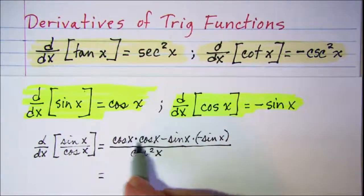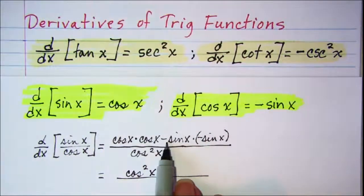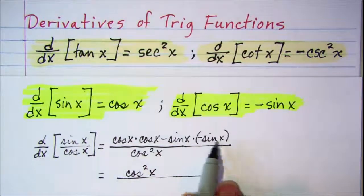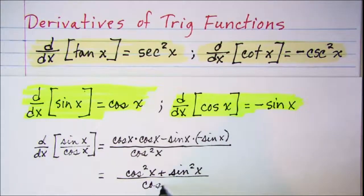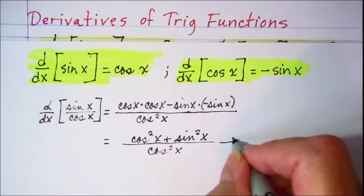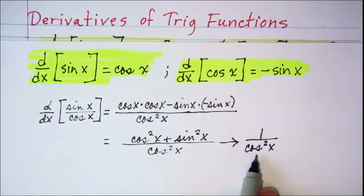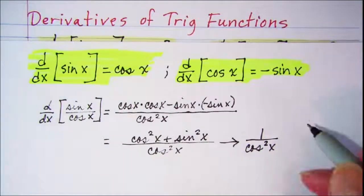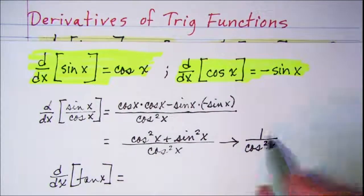Simplifying, we have cosine squared x, and then negative sine x times negative sine x gives plus sine squared x, all over cosine squared x. Using the Pythagorean identity, cosine squared plus sine squared equals one, so this becomes one over cosine squared x, which is secant squared x. That gives us the derivative of tangent x equals secant squared x.